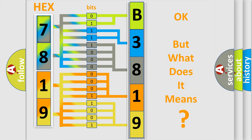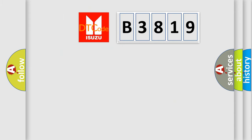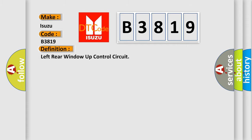We now know in what way the diagnostic tool translates the received information into a more comprehensible format. The number itself does not make sense if we cannot assign information about what it actually expresses. So, what does the diagnostic trouble code B3819 interpret specifically for Isuzu car manufacturers? The basic definition is: Left rear window up control circuit.